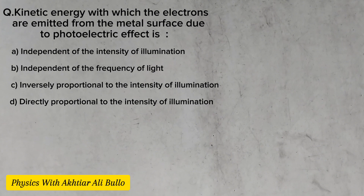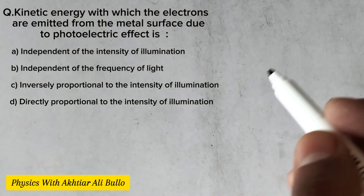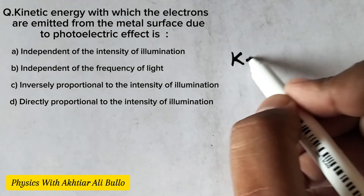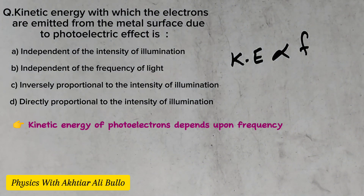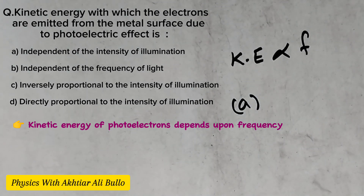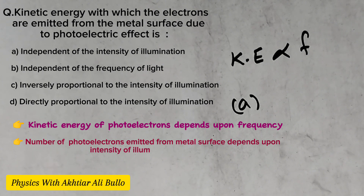The kinetic energy of the photoelectrons is directly proportional to the frequency, so it depends upon frequency, but it does not depend upon intensity. So the correct option will be (a) independent of the intensity of illumination, because the number of photoelectrons emitted from the metal surface depends upon the intensity of illumination.